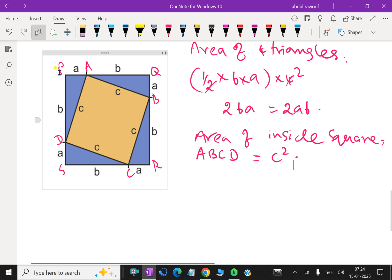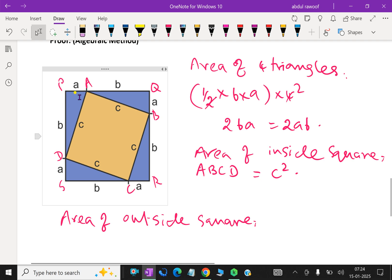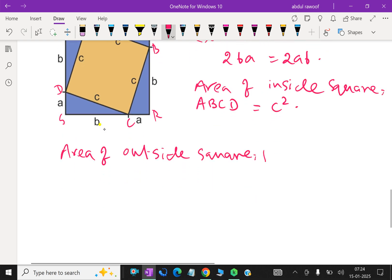Now consider area of the square PQRS, area of outside square. Look at here, here one side is A + B. That is square, area of outside square PQRS equal to (A + B)².